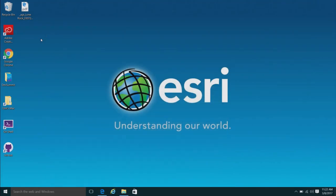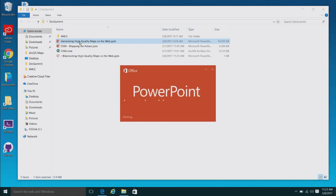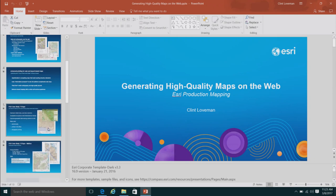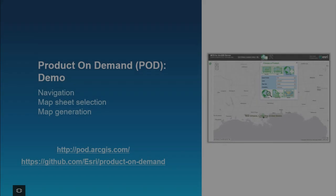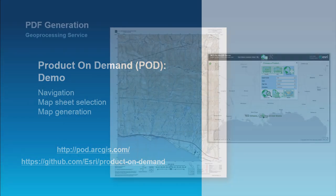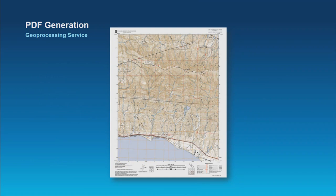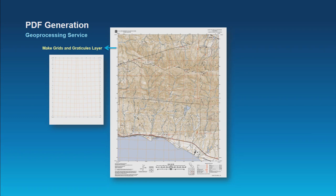Let me go back to the PowerPoint for a quick overview of what's happening behind the scenes. The final output is a GP service based on Python. In this particular map, there's a Grids and Graticules tool that creates grids and graticules as features inside the geodatabase — fundamentally a geoprocessing tool. When this map gets generated, a series of geoprocessing tools are running, and you have access to all existing geoprocessing tools through a workflow like this. There's also a Python method called 'add grid data' from a Python site package that's part of the production mapping extension.